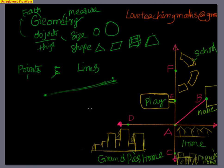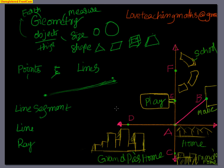Now let's see what a line segment is. Take this simple example: the kid starts from home and goes to the movie complex. He knows his starting point and his ending point — he stops at the movie complex. When you know your starting point and ending point, you refer to it as a line segment. A line segment is a part of a line on which you know your starting point and ending point.